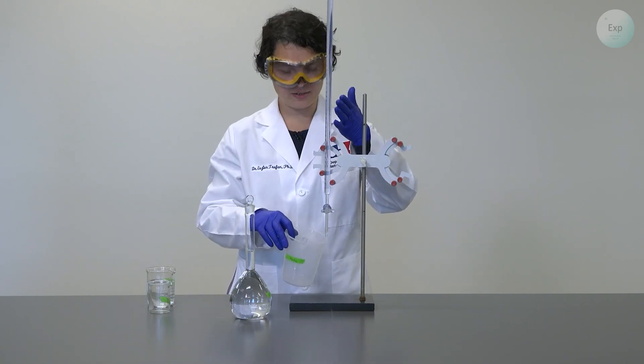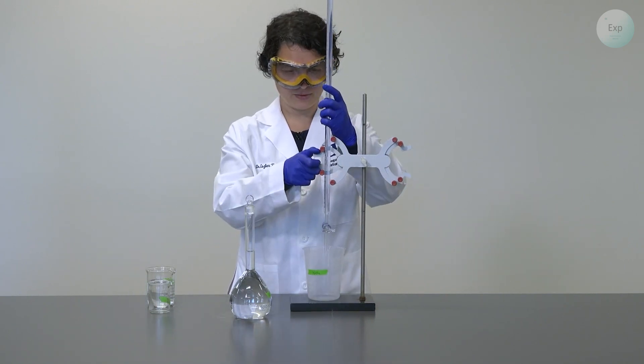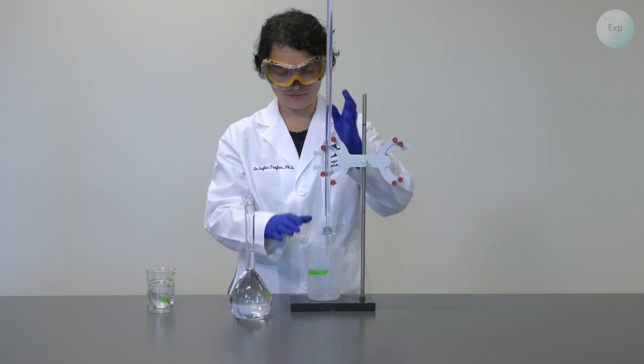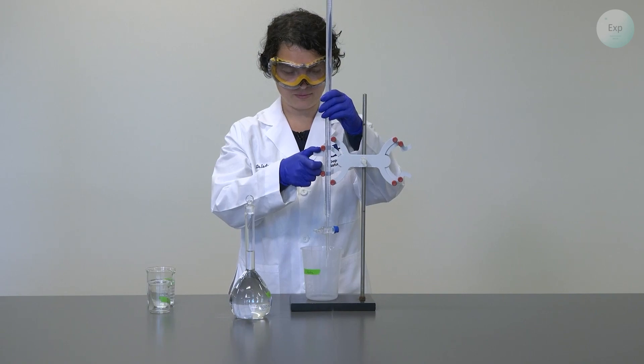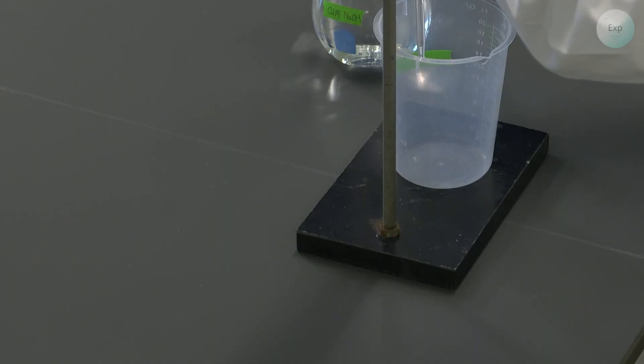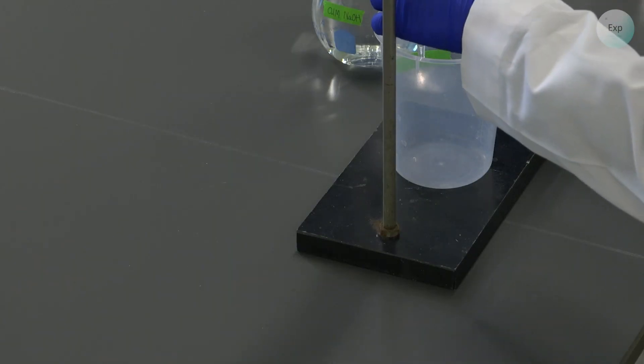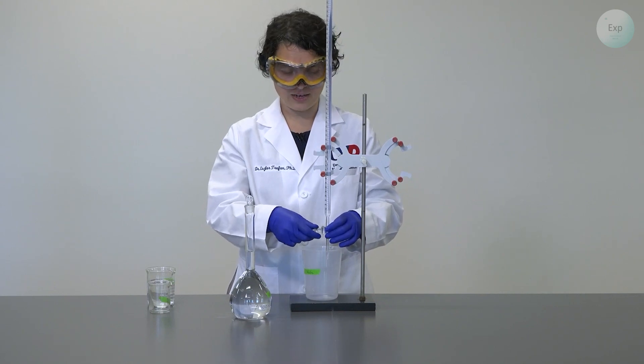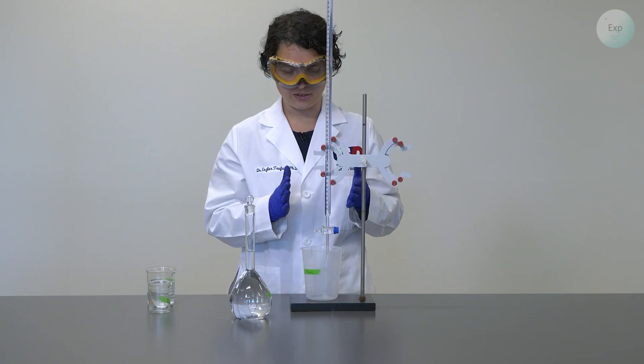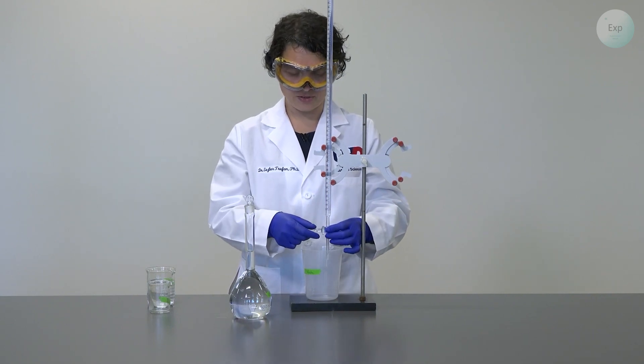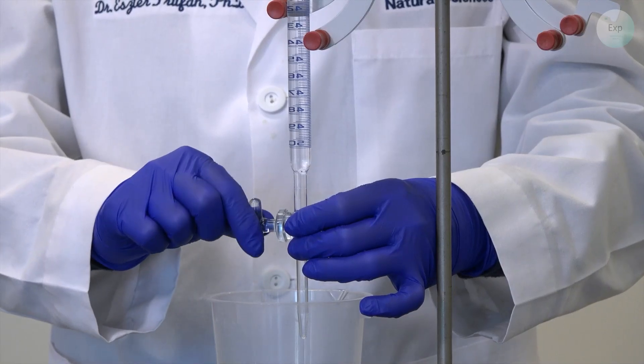Then because whatever it is that we are washing out with the water is going to be waste, we bring our waste container right below our burette, and then we learn how to operate the stopcock. The first thing that we need to learn is how to completely open it and release our water in a straight stream. We hold the case of the stopcock and we open it up completely.